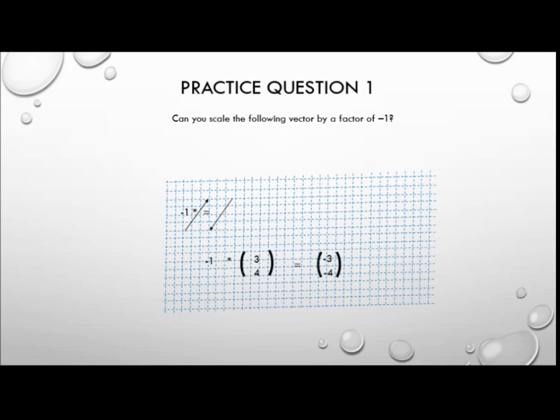Okay so as you can see the arrow is exactly the same size but pointing in the opposite direction. And in component form if we multiply negative one by a vector (3, 4) then we'll get (-3, -4).